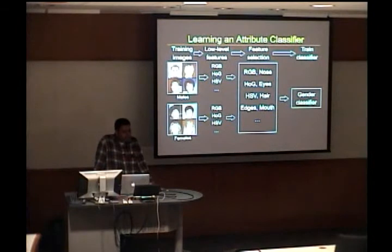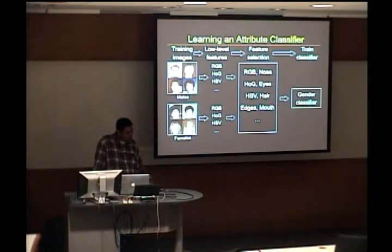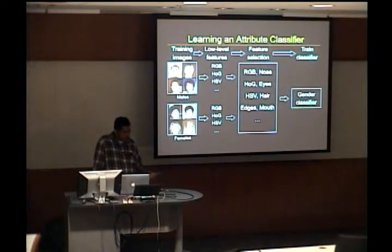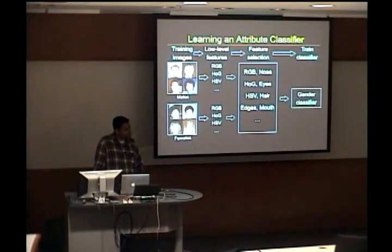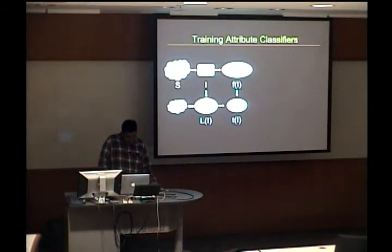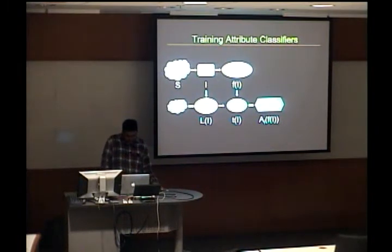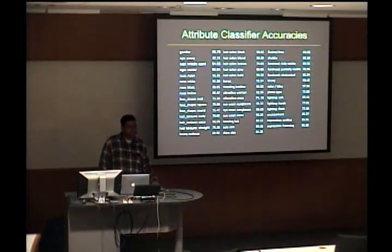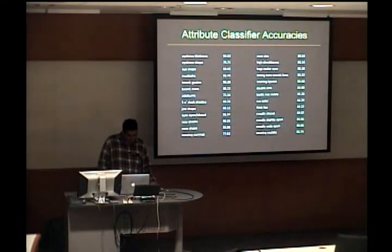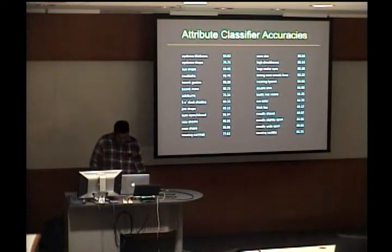We looked at boosting as well — it was a little bit trickier to get it to work right and it didn't seem to work quite as well. There are many different ways we could do this feature selection and it's not clear we have anything close to the best. Once we go through this training process, we can do it for many different attributes since we have labels for many of them. Most classifier accuracies are in the 80s, some higher in the 90s, some lower in the 70s — on the whole we do quite well, though they're not perfect.